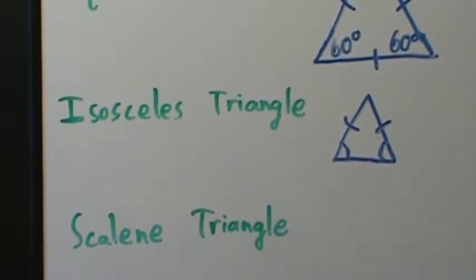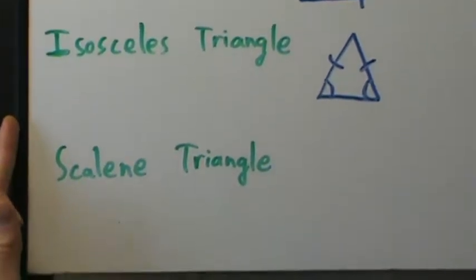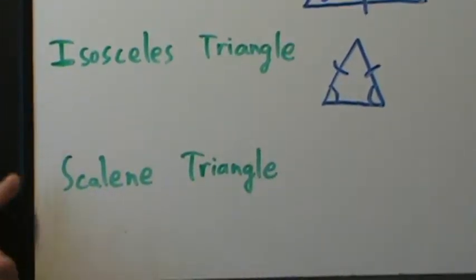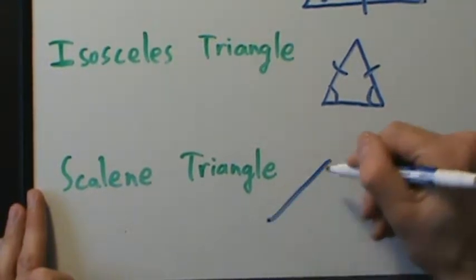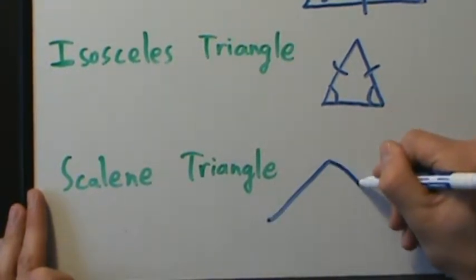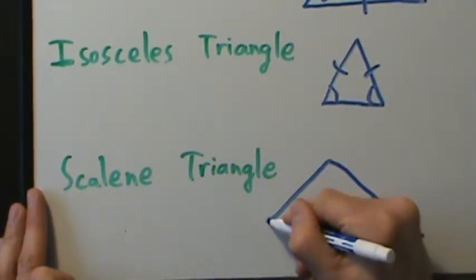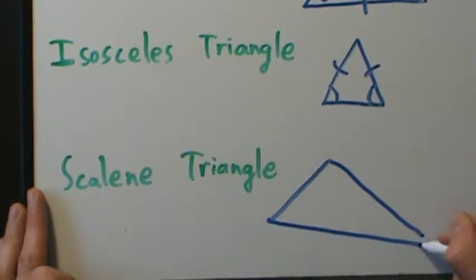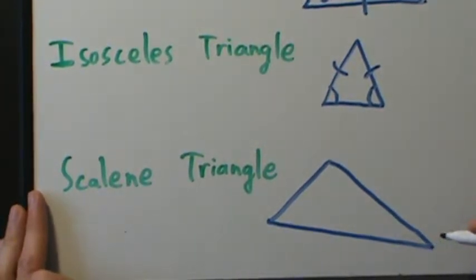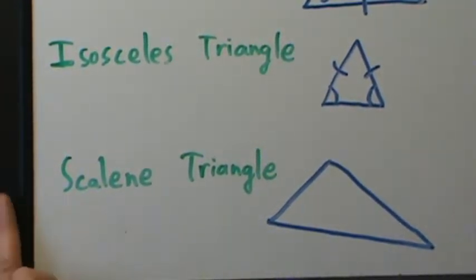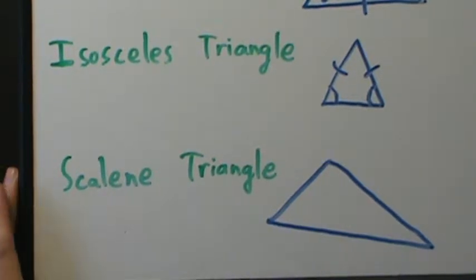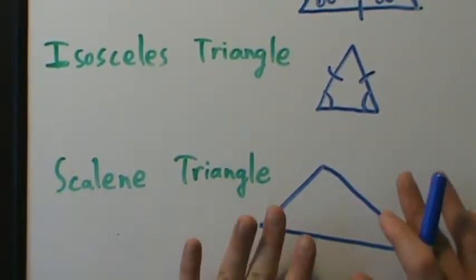There's also the scalene triangle. Let's draw a picture — in a scalene triangle, all three sides have different lengths, so we can't say the angles are equal to each other.